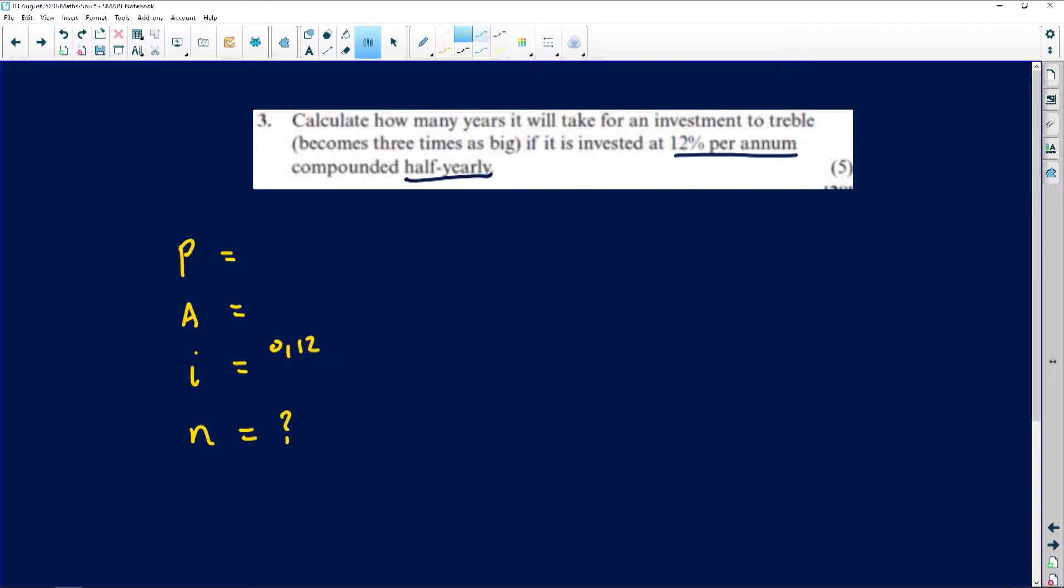Compounded half yearly—once they say compounded half yearly you should know that we need to divide our interest by two so that it matches the statement given to us. In a year there are two half years. If they said compounded quarterly I would divide by four. If they said compounded monthly I would divide by 12 because there are 12 months in a year.